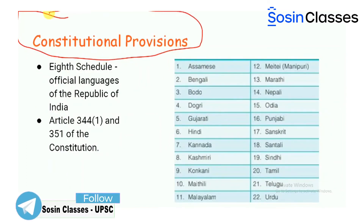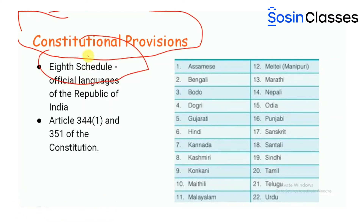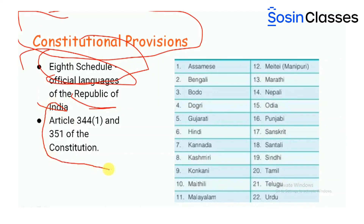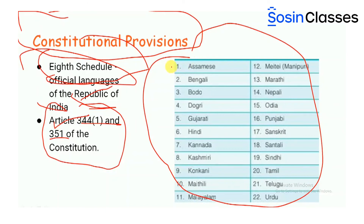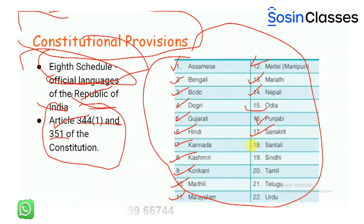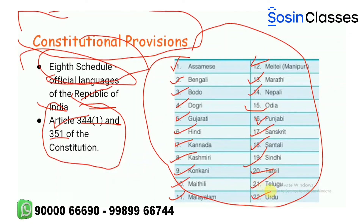Coming to the constitutional provisions: the 8th Schedule of the Indian Constitution lists the official languages of the Republic of India. The constitutional provisions relating to the 8th Schedule occur in Articles 344(1) and 351 of the Indian Constitution. As per these articles, the 8th Schedule includes recognition of the following 22 languages: Assamese, Bengali, Bodo, Dogri, Gujarati, Hindi, Kannada, Kashmiri, Konkani, Maithili, Malayalam, Manipuri, Marathi, Nepali, Odia, Punjabi, Sanskrit, Santali, Sindhi, Tamil, Telugu, and Urdu.